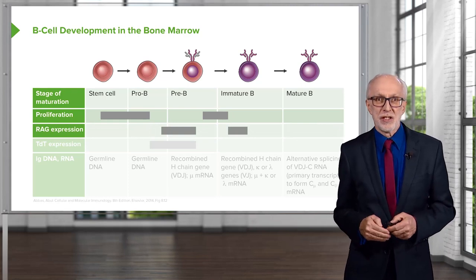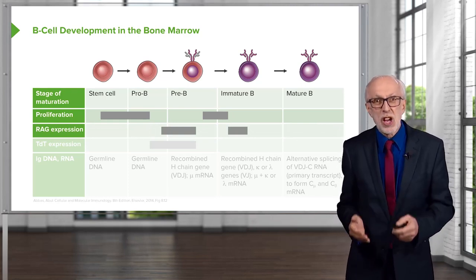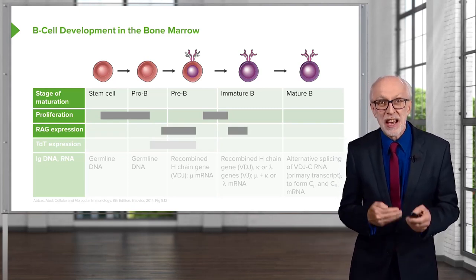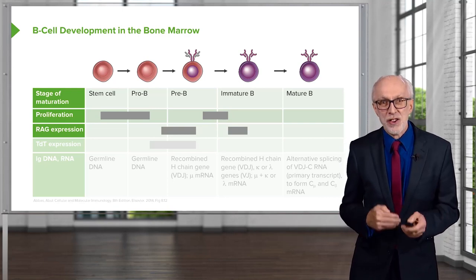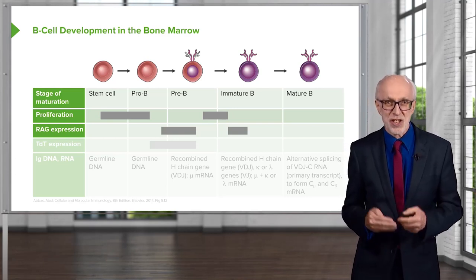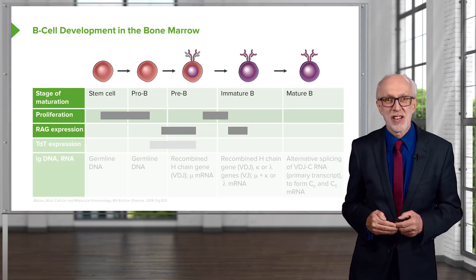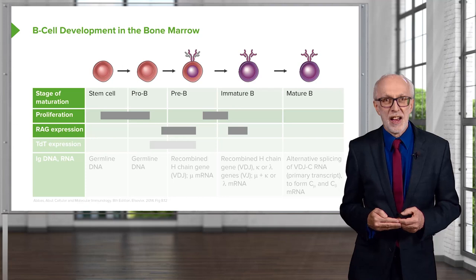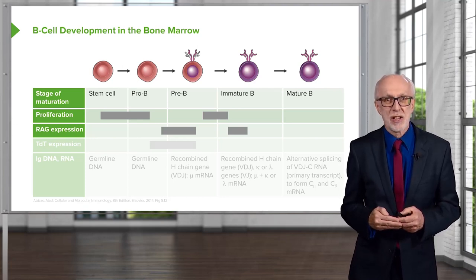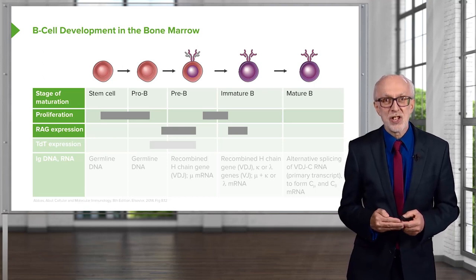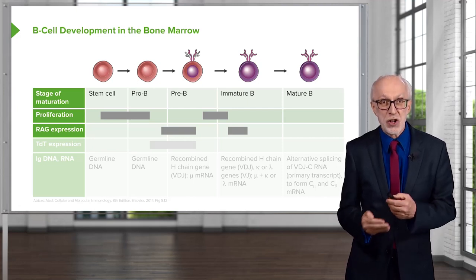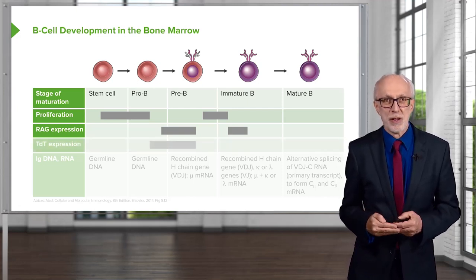There are two genes called RAG1 and RAG2 — recombination activating genes. The immunoglobulin genes in the B cell undergo recombination to create diversity, and these recombination activating genes play a role in that. These genes are expressed at two different points in B cell development: at the pro-B to pre-B stage, and then they can become re-expressed later in immature B cells to fine-tune the antigen receptor on the B cell.